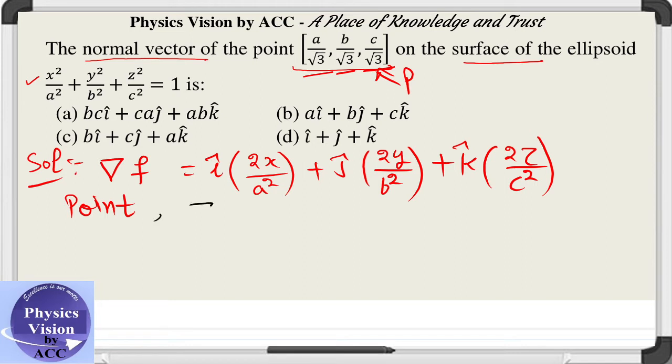We will get delta f equals i cap, and this is 2 by root 3 a. Notice I have cancelled out one a with the a squared in the denominator. Similarly we will be getting j cap and 2 by under root 3 b.